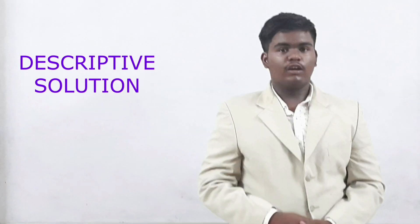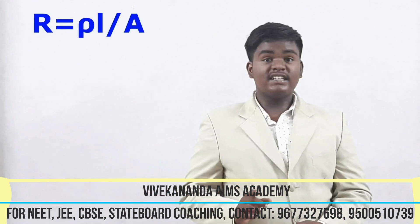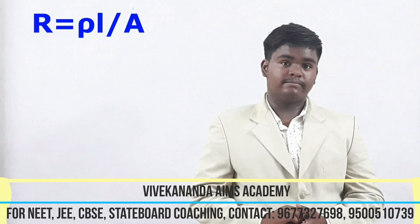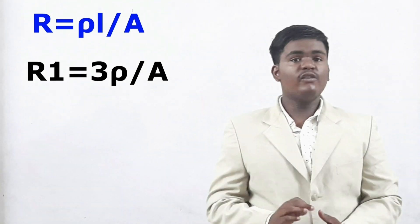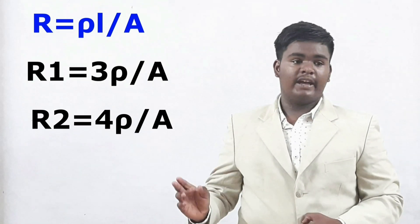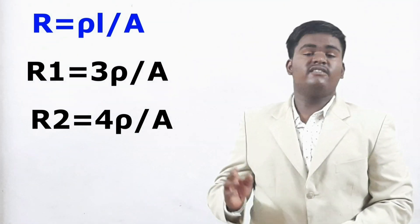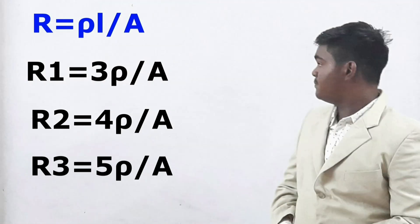Let us go to the descriptive solution of this question. Do you know what is the formula for finding the resistance? The formula is R is equal to rho L by A. Therefore, the value of R1 is equal to 3 rho by A, the value of R2 is 4 rho by A, the value of R3 is 5 rho by A which is displayed in the screen.